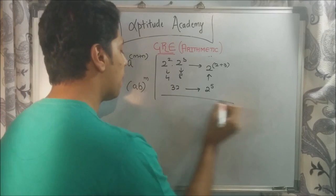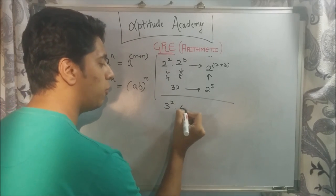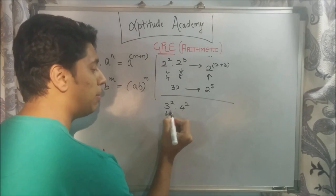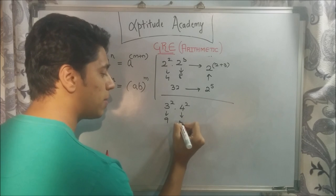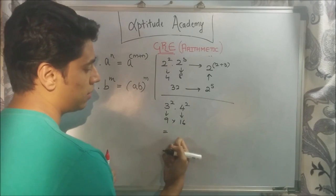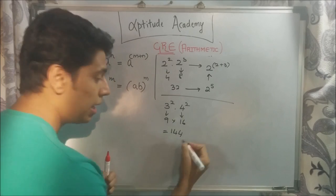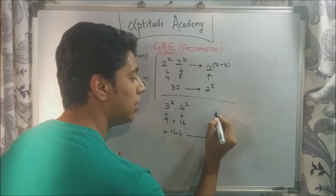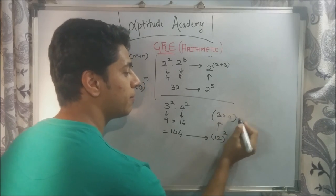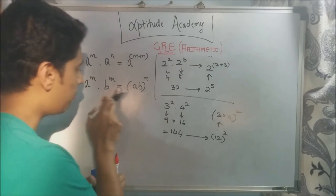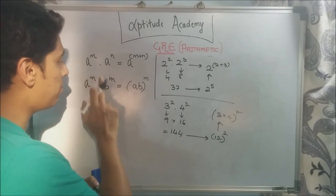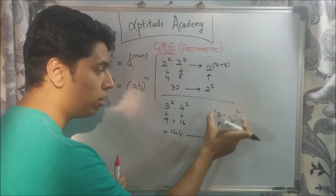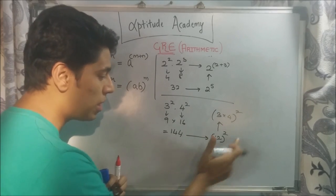Second: if the bases are different but the exponent is the same, carry out the operation with the bases and retain the exponent. For example, 3 squared into 4 squared: 9 into 16 is 144, and 144 is 12 squared. What is 12? It's 3 into 4. So by the rule A raised to m into B raised to m equals AB raised to m: 3 squared into 4 squared is 3 into 4, all raised to 2 — which is 12 squared equals 144.